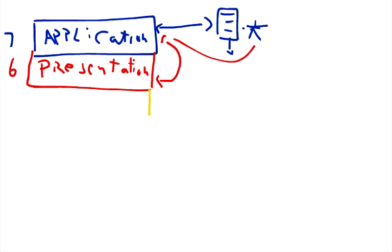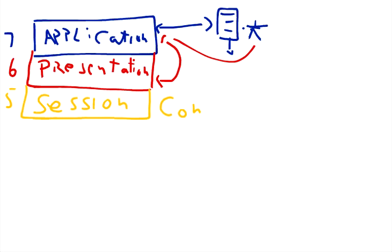Under the presentation layer we have a layer called the session layer. The main purpose of the session layer is to establish, maintain, and terminate the connection between two nodes on the network.